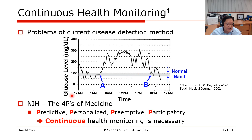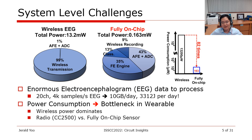That's why the NIH, which is National Institute of Health, has proposed the four Ps of medicine: predictive, personalized, preemptive, and participatory. And to enable this, continuous health monitoring is very, very important.